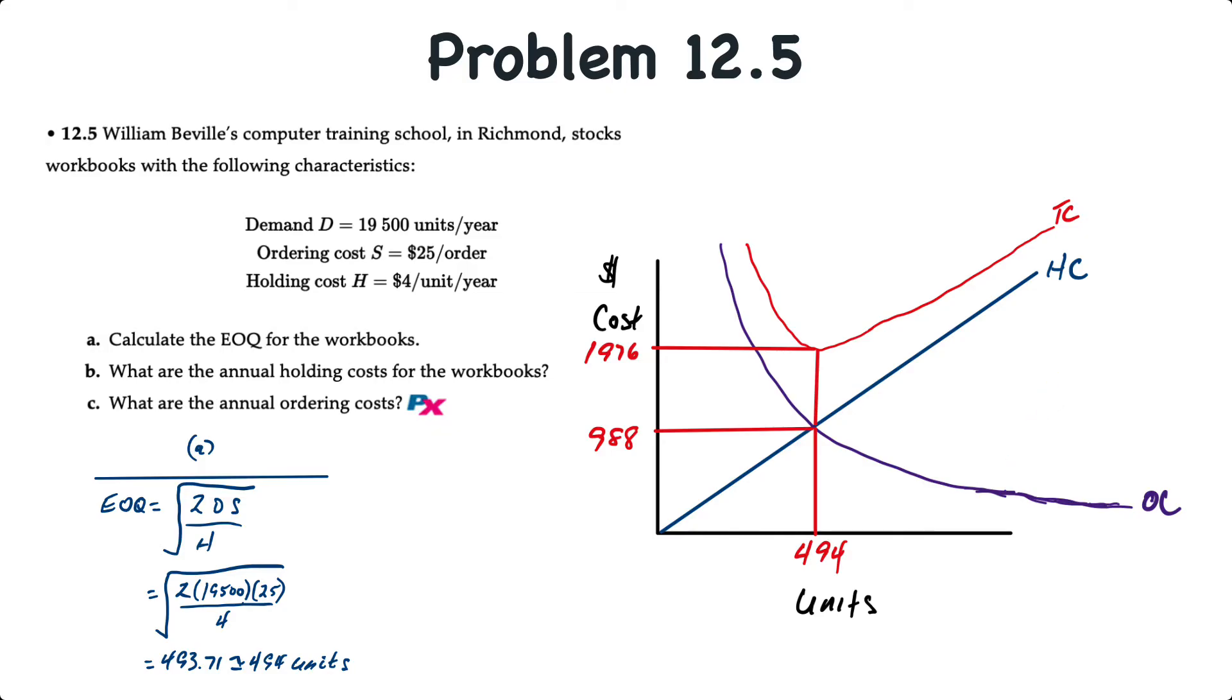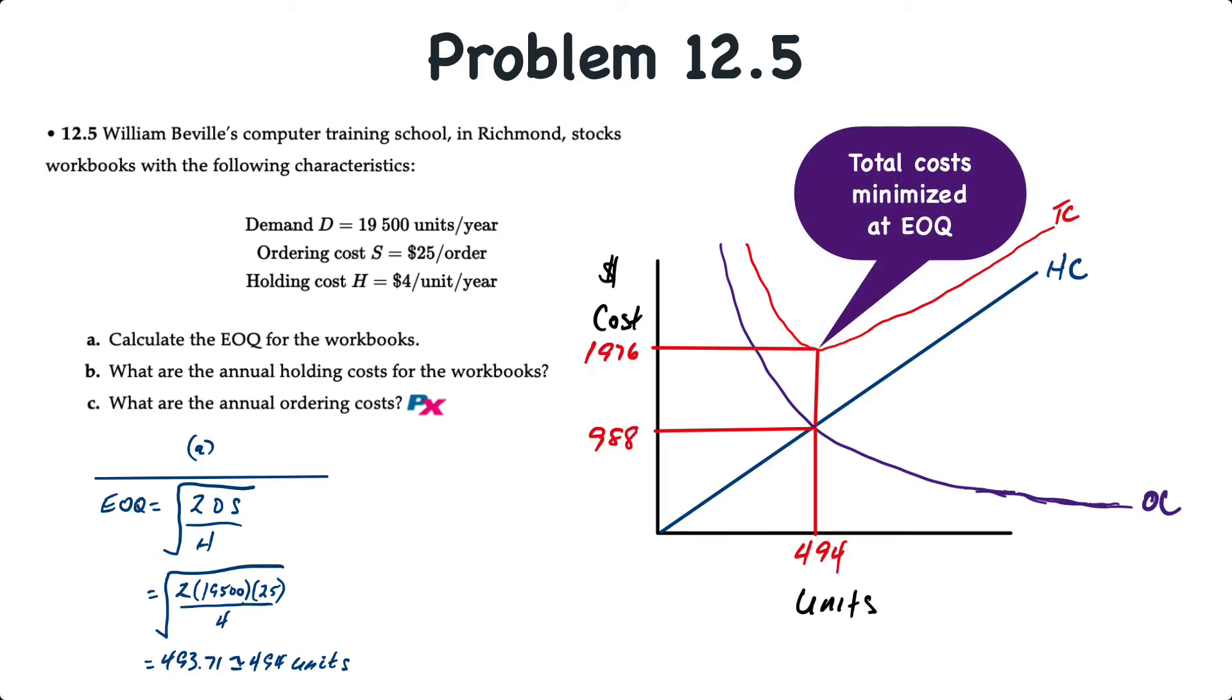So the holding cost is represented by the blue line, and the order cost represented by the purple line, where the two cross is where the economic order quantity is at 494 units, and that relates to a cost of about $988. The red curve, as you can see, is the total cost curve, and that's simply the sum of the holding cost and the ordering cost. You can see that if we take the ordering cost and the holding cost, each being about $988, that results in a total cost of $1,976. And the low point of the red total cost curve is also where the holding cost and the order cost intersect.